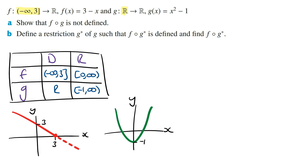The domain of f is from minus infinity to 3. The lowest value of the function g is minus 1, and so we need to restrict its domain so that its largest value is 3. In other words, the function g with its restricted domain will have a range from minus 1 to 3.